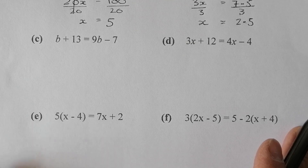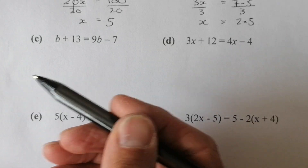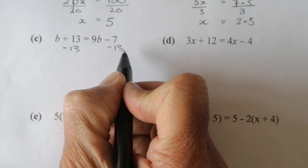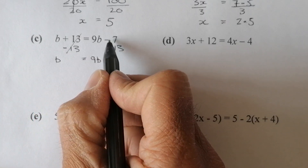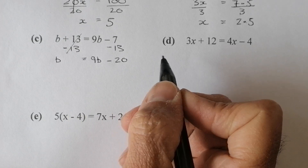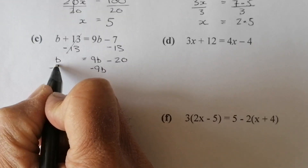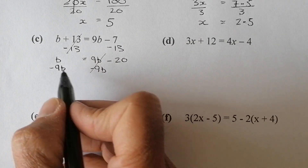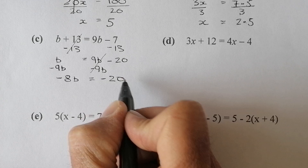Next question: b plus 13 equals 9b minus 7. Again, letters to the left, numbers to the right. Subtracting 13 from both sides cancels the 13, leaving b on this side and 9b on the other, with negative 7 take away 13 giving minus 20. Then I get rid of the 9b by subtracting 9b from both sides — b take away 9b gives minus 8b, equalling minus 20.